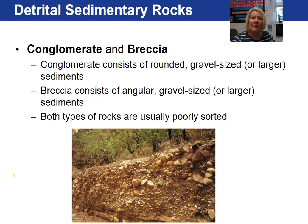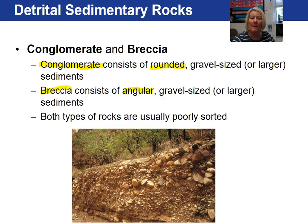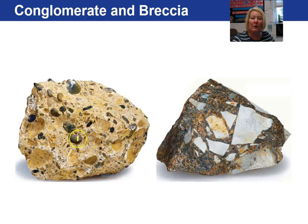Our last detrital sedimentary rocks are conglomerates and breccia. These rocks are comprised of gravel-sized particles. A conglomerate consists of well-rounded gravel, whereas a breccia consists of angular gravel. Both rock types are usually poorly sorted, indicating a short transportation distance from wherever the material was eroded. Here are images of conglomerate — well-rounded gravel cemented together — versus breccia — angular gravel cemented together.